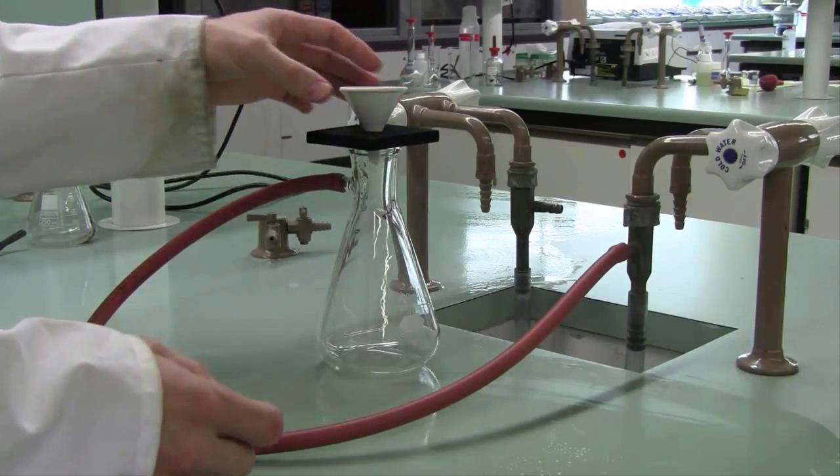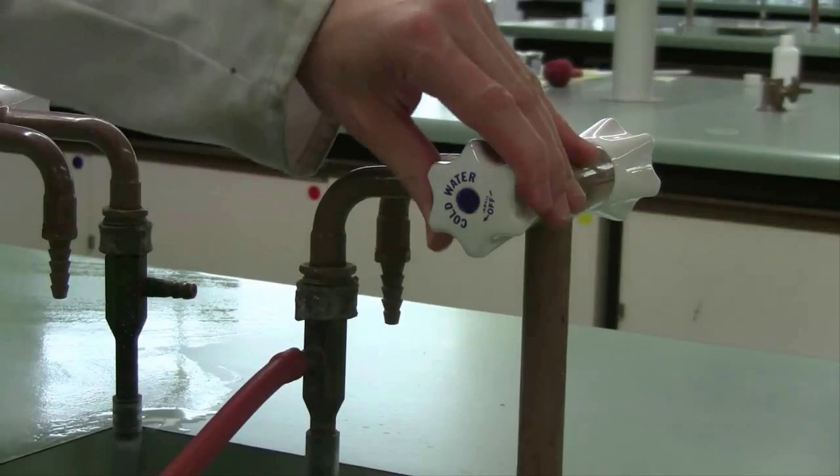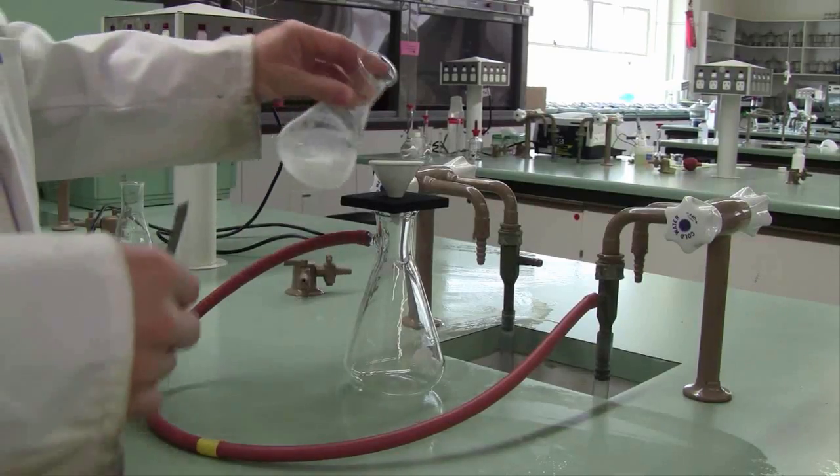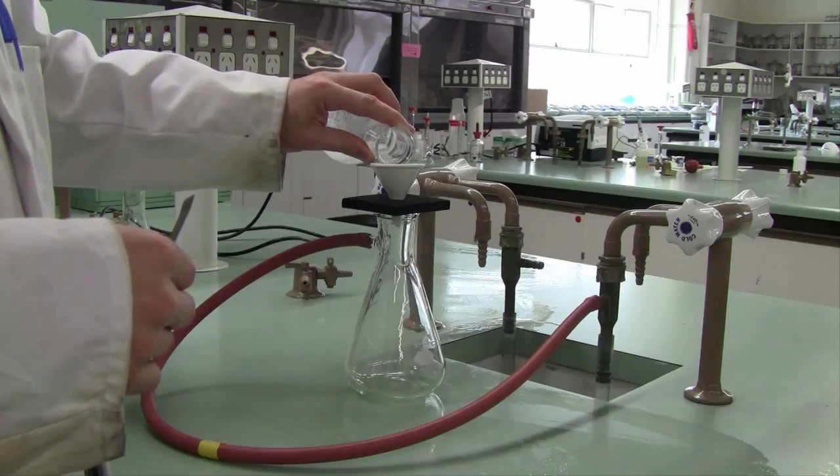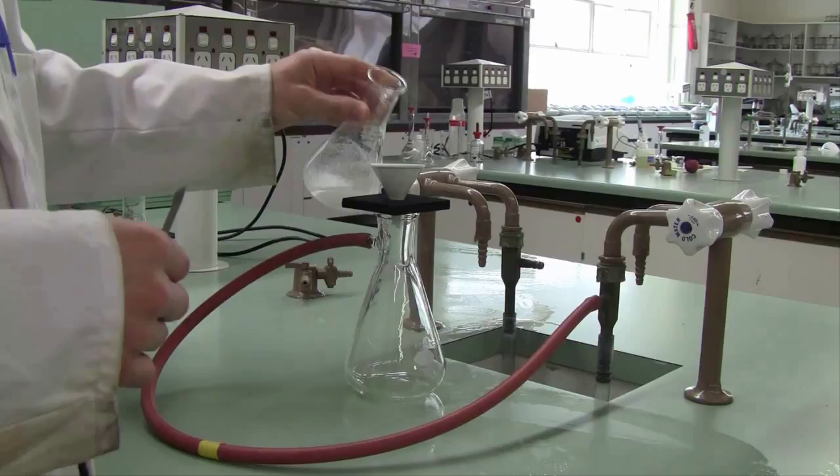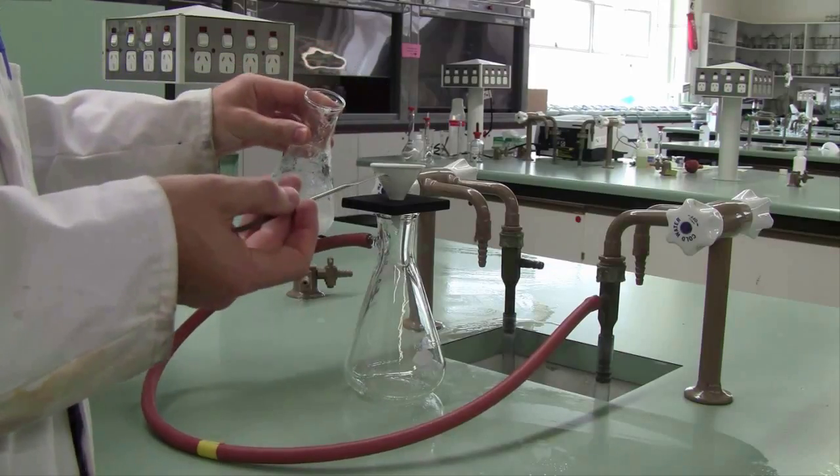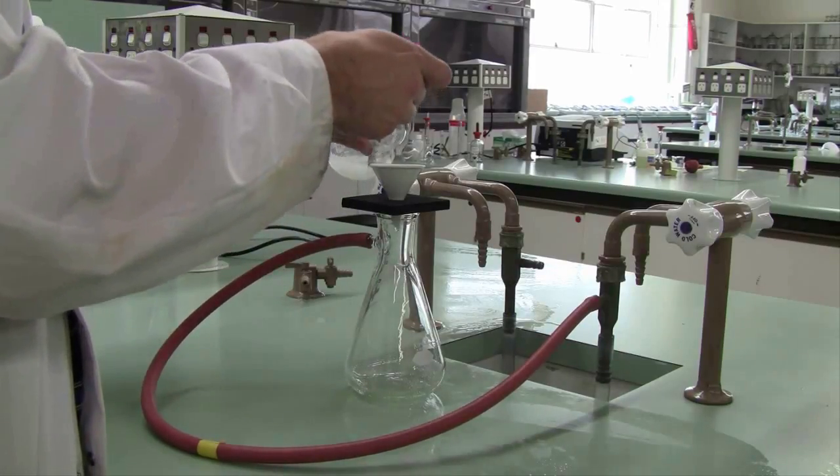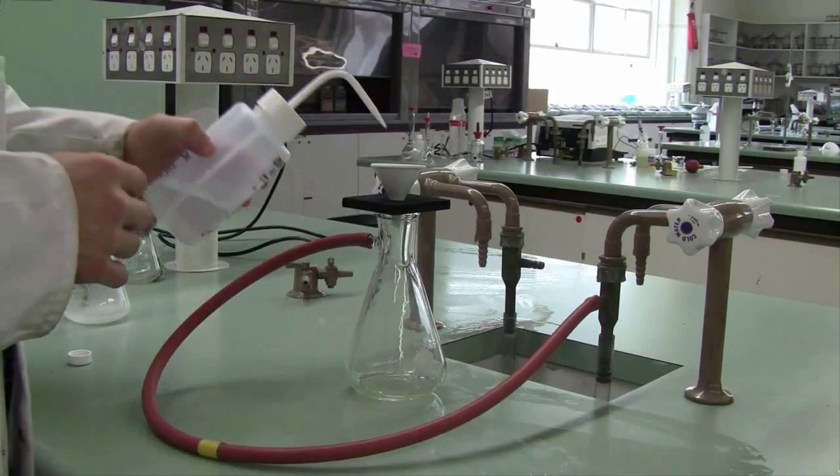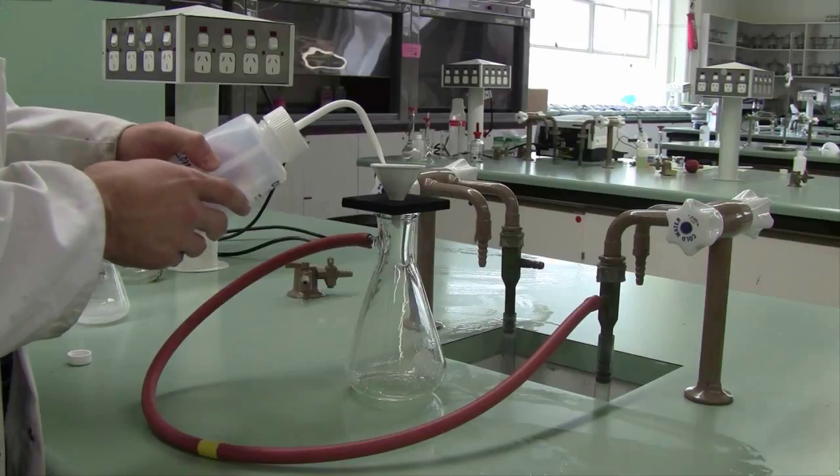Turn on the water in order to achieve a vacuum and then pour your sample slowly through the filter. Once the filter paper is completely wet the vacuum will take over and you can then continue pouring your crystals through. You can use a small amount of water to wash your crystals and then leave the vacuum running for an extended period of time to help dry your crystals.